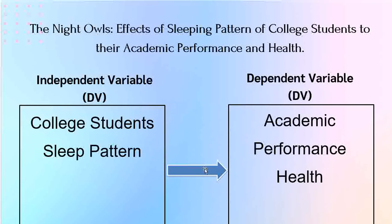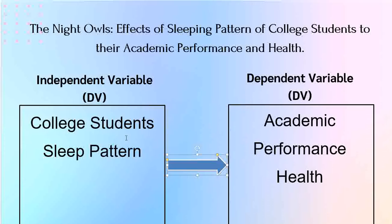Ngayon, yung arrow na nakikita nyo sa slide natin — this arrow here — ito yung nagsisignify ng relation, ng link ng independent variable sa dependent variable. Ibig sabihin, yung arrow na ito signifies that this variable — yung academic performance and health — ay nakadepende, umaasa doon sa pag-aaral na isinagawa natin doon sa college students at ng kanilang sleeping pattern.